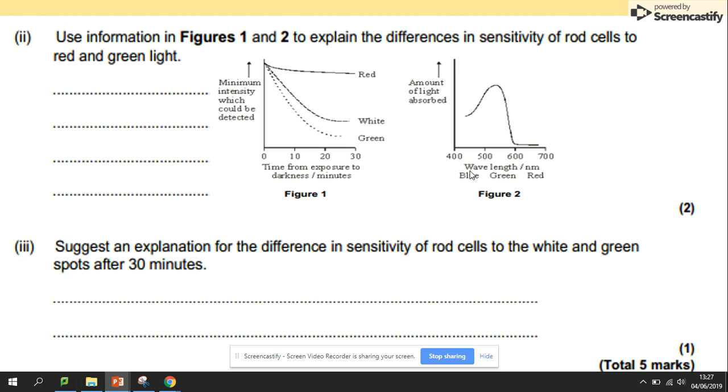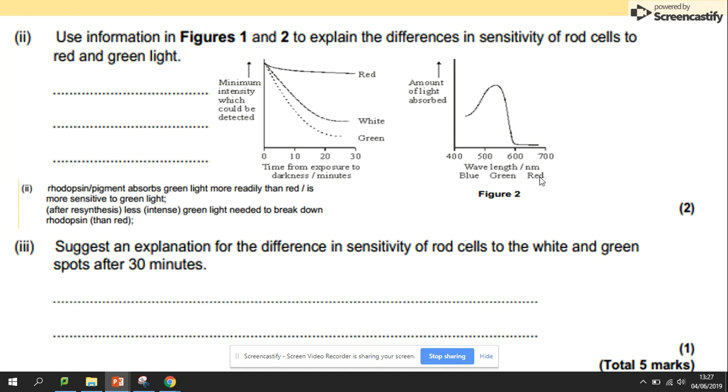What we can predict is that rhodopsin, because we're talking still about the rod cells, will absorb green light more than red, as we can see here. So the resynthesis: less intense green light is needed to be broken down by rhodopsin.